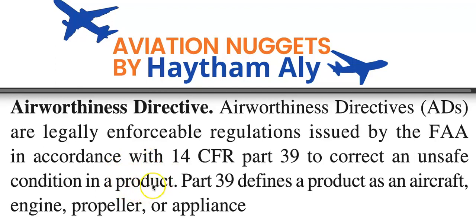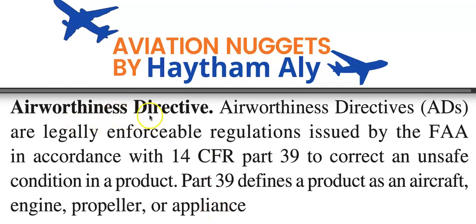What is the definition of a product? Under Part 39, a product is defined as an aircraft, aircraft engine, propeller, or appliance. So the function of the airworthiness directive is to correct an unsafe condition in any such product.